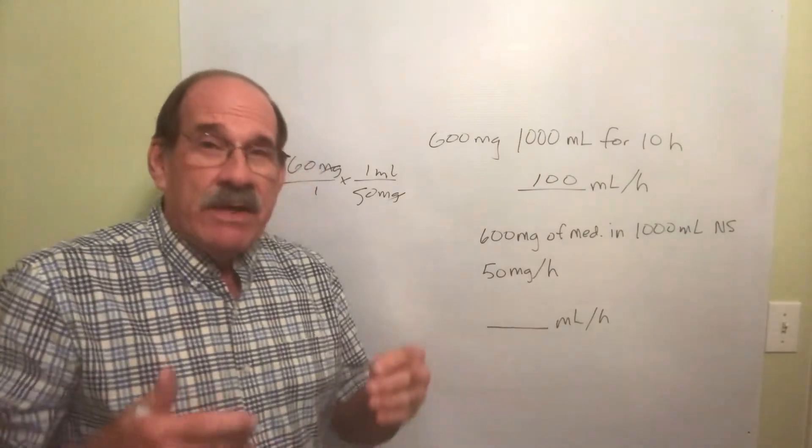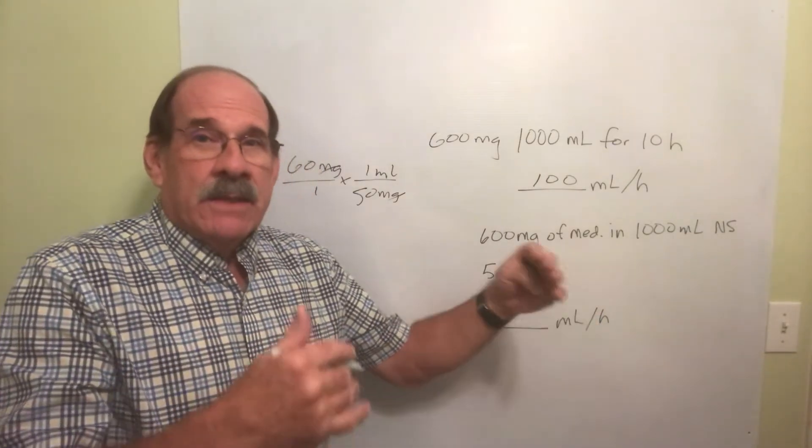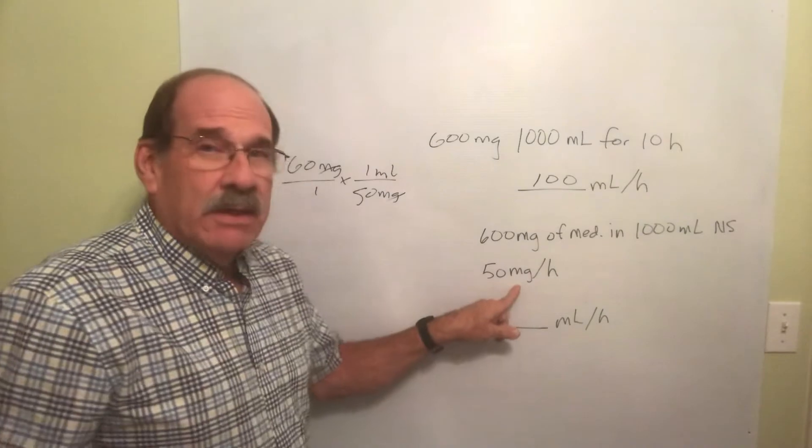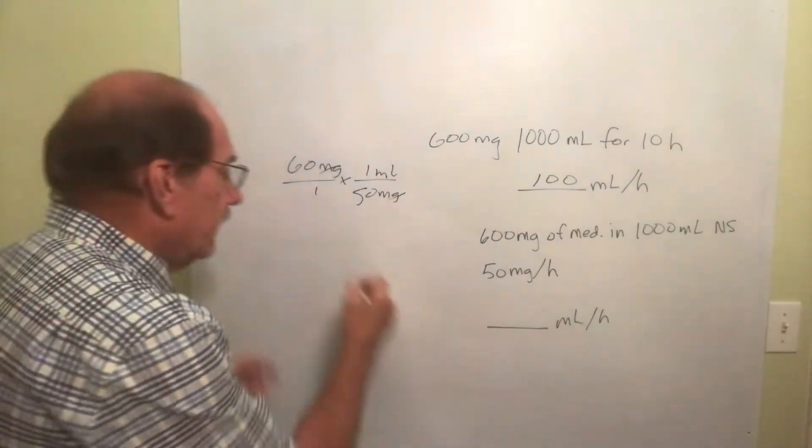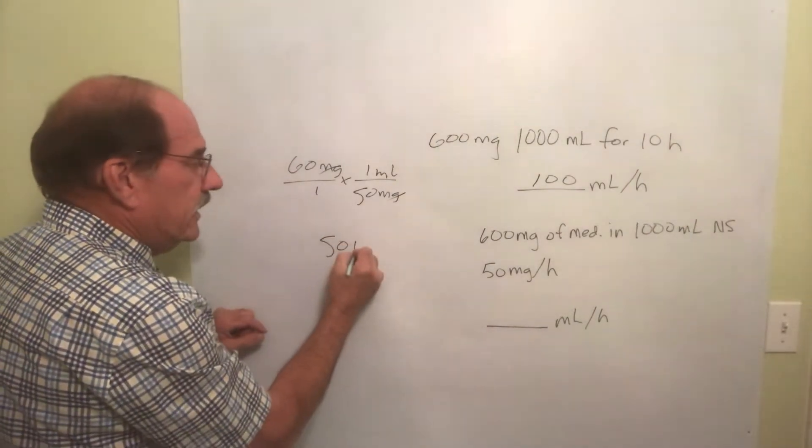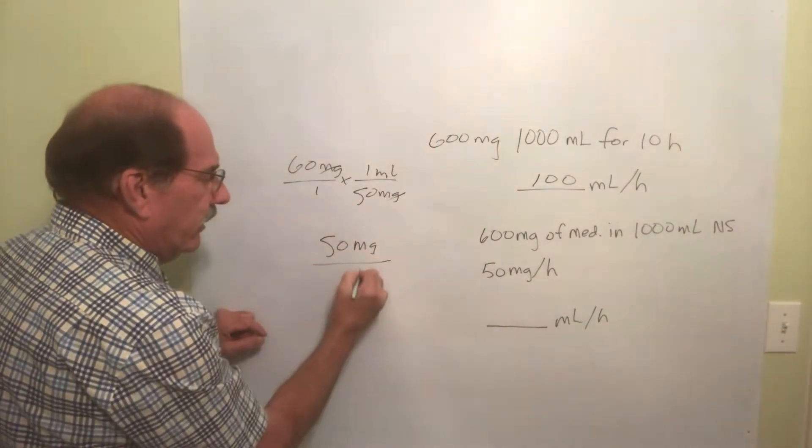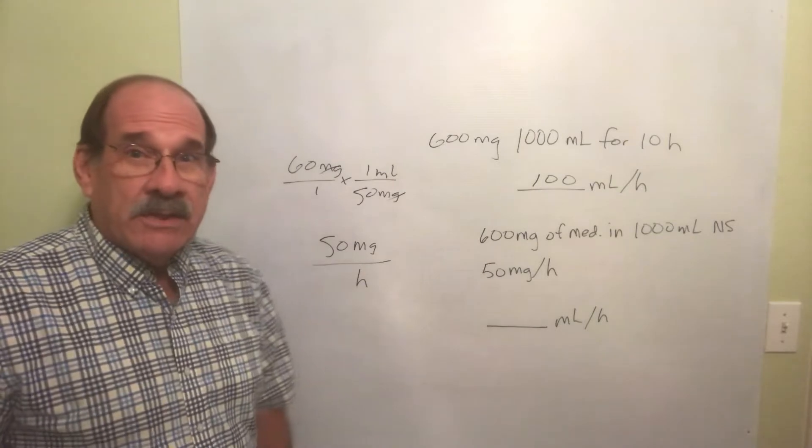So let's write this down in the following fashion. Let's write this way: 50 milligrams per hour. That's a little different from here because if it's just an amount you put that over one to make it a fraction.